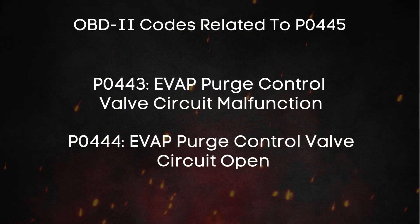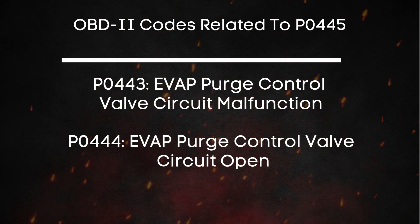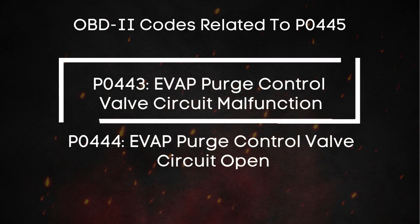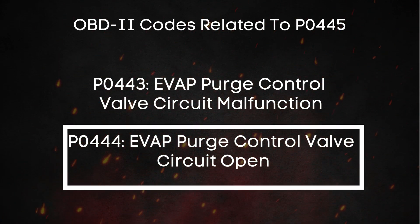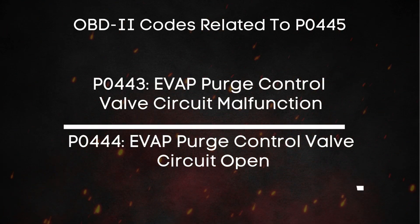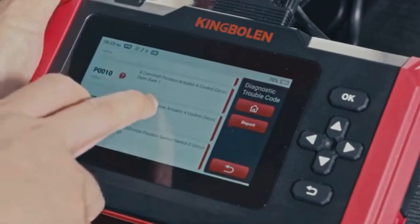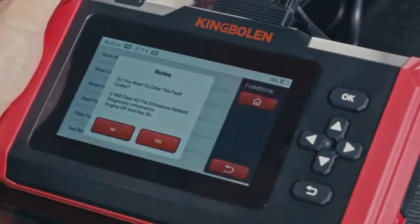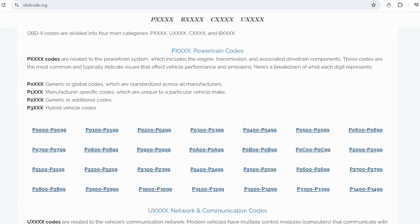Just like the P0445 code, you might also run into other trouble codes related to the EVAP system. For example, P0443 points to an EVAP purge control valve circuit malfunction, meaning there's some kind of issue in the circuit preventing the valve from working properly. On the other hand, P0444 indicates an EVAP purge control valve circuit open, meaning there's a complete break in the circuit. If you want to read more about other OBD-II codes, you can visit our website obdcode.org for a full list of codes and their meanings.